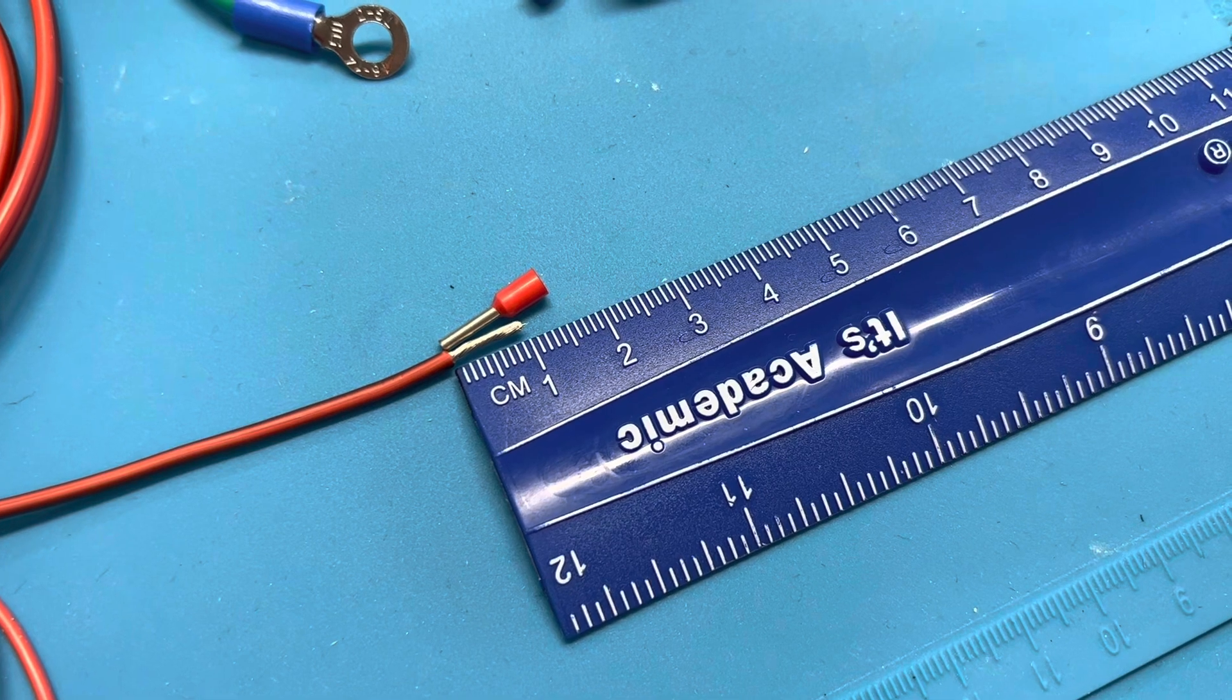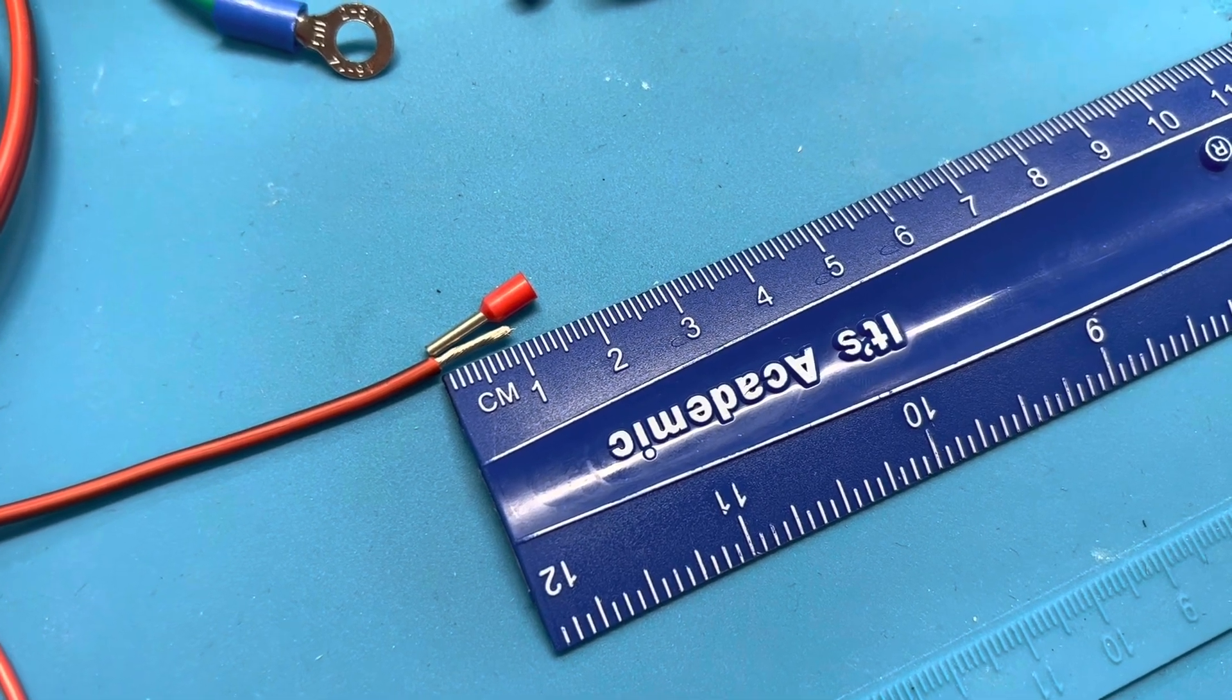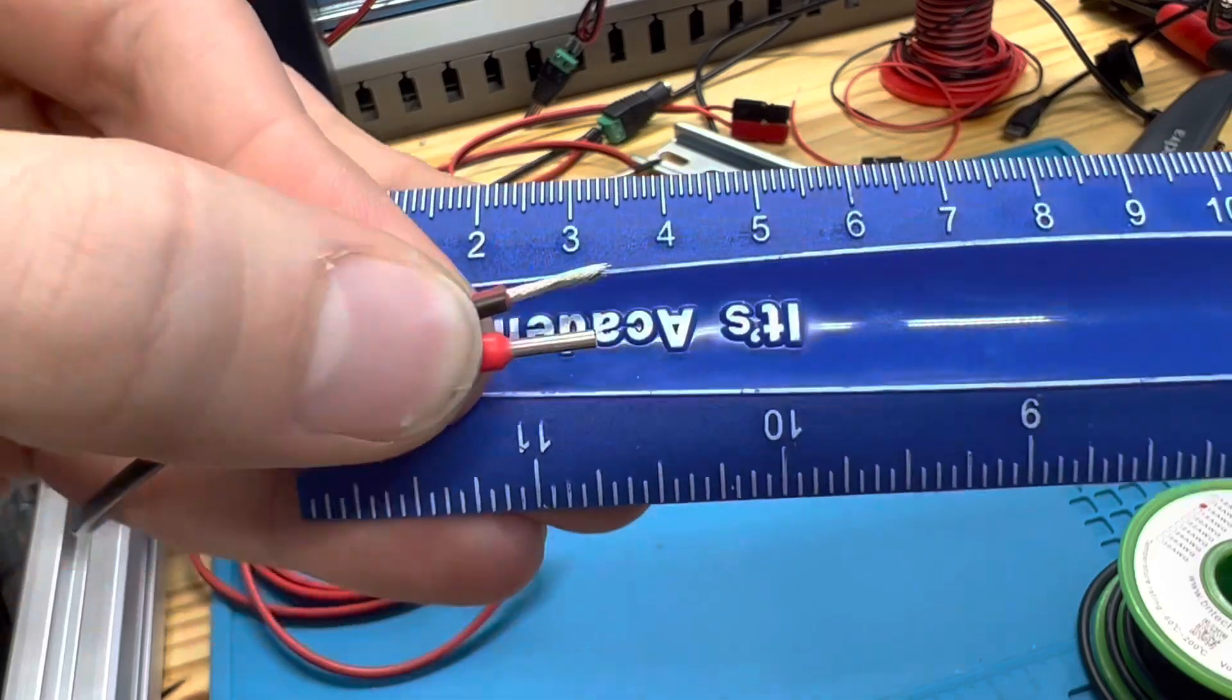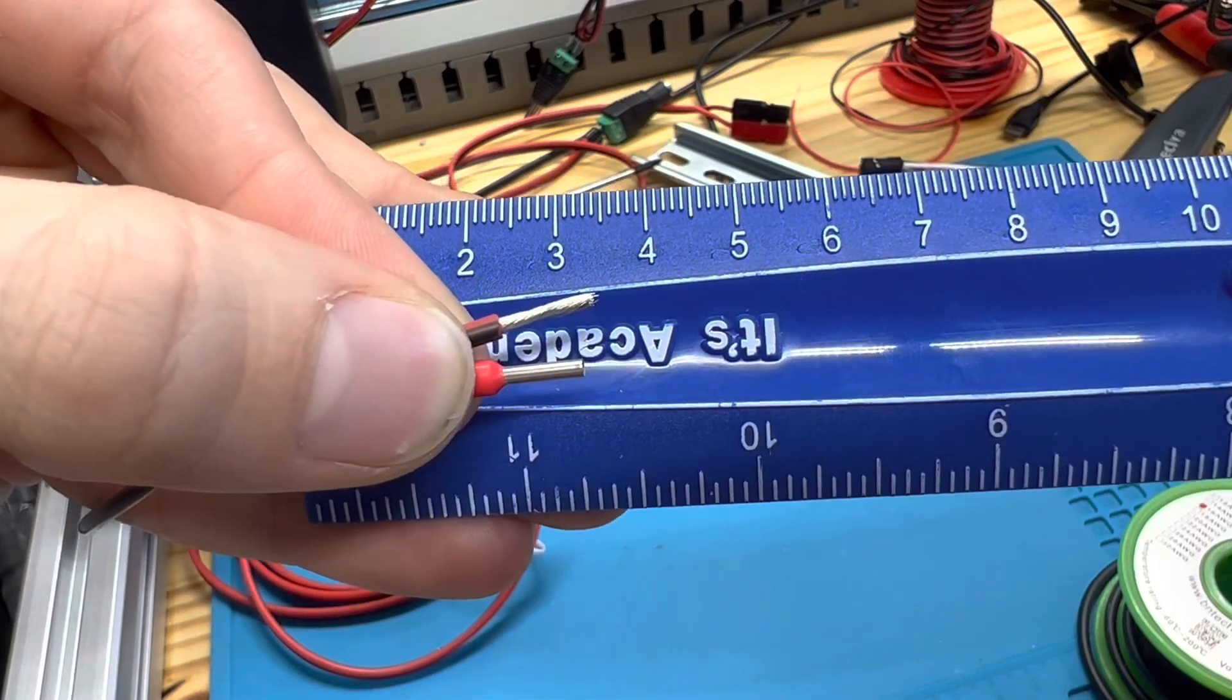Start by stripping at least 10 millimeters of insulation off of your wire. Notice that you're stripping actually a little bit more than the exposed metal part of the terminal.